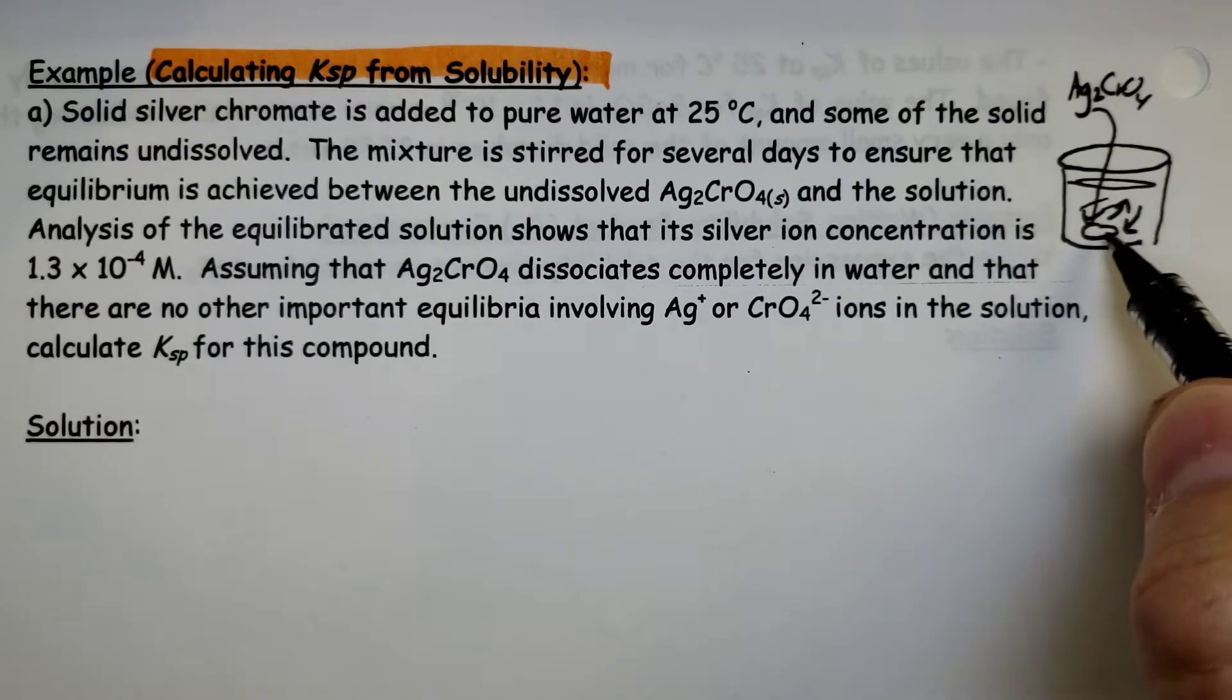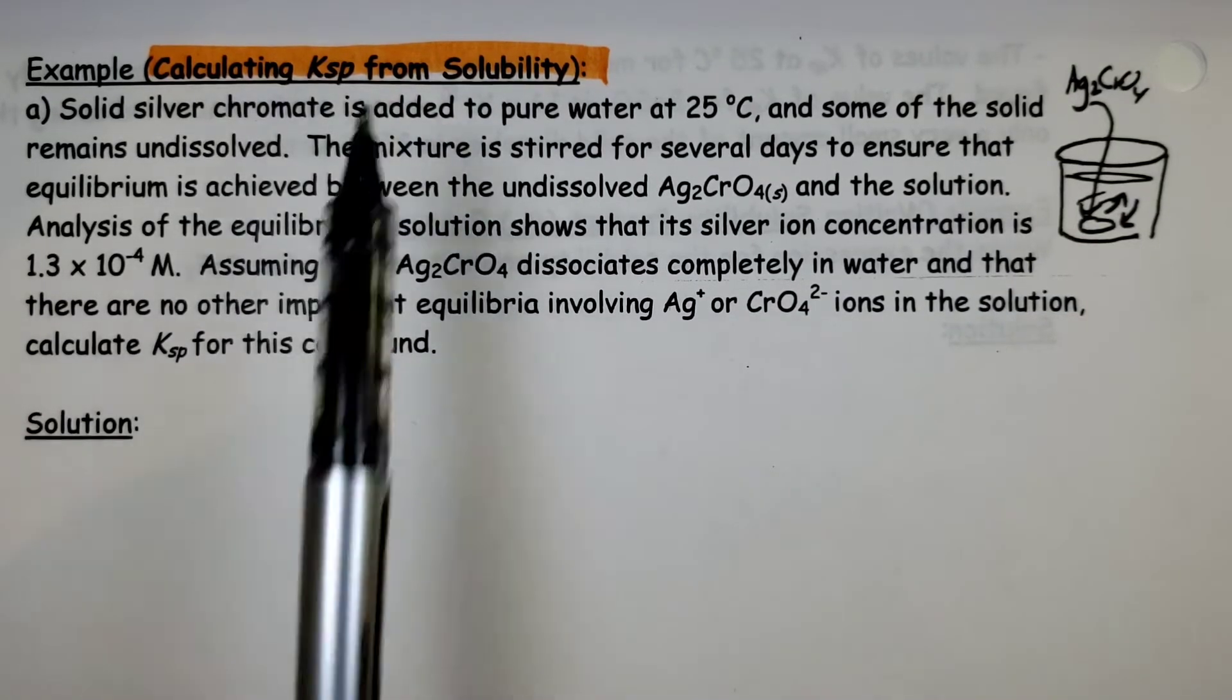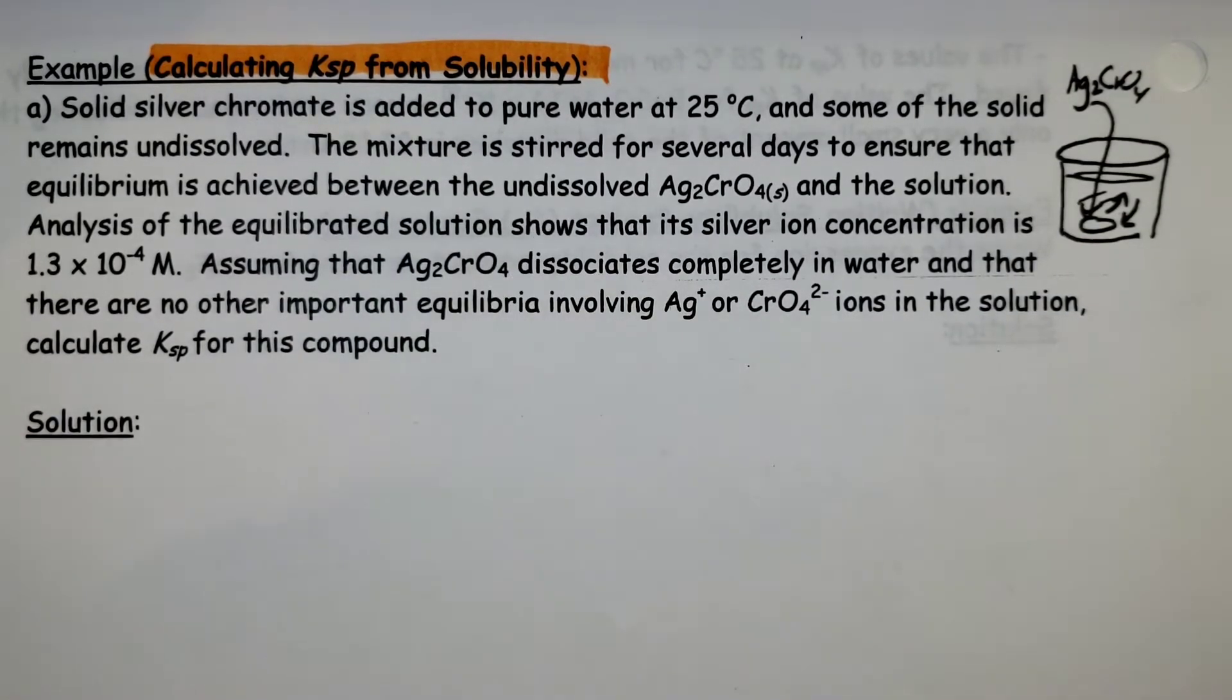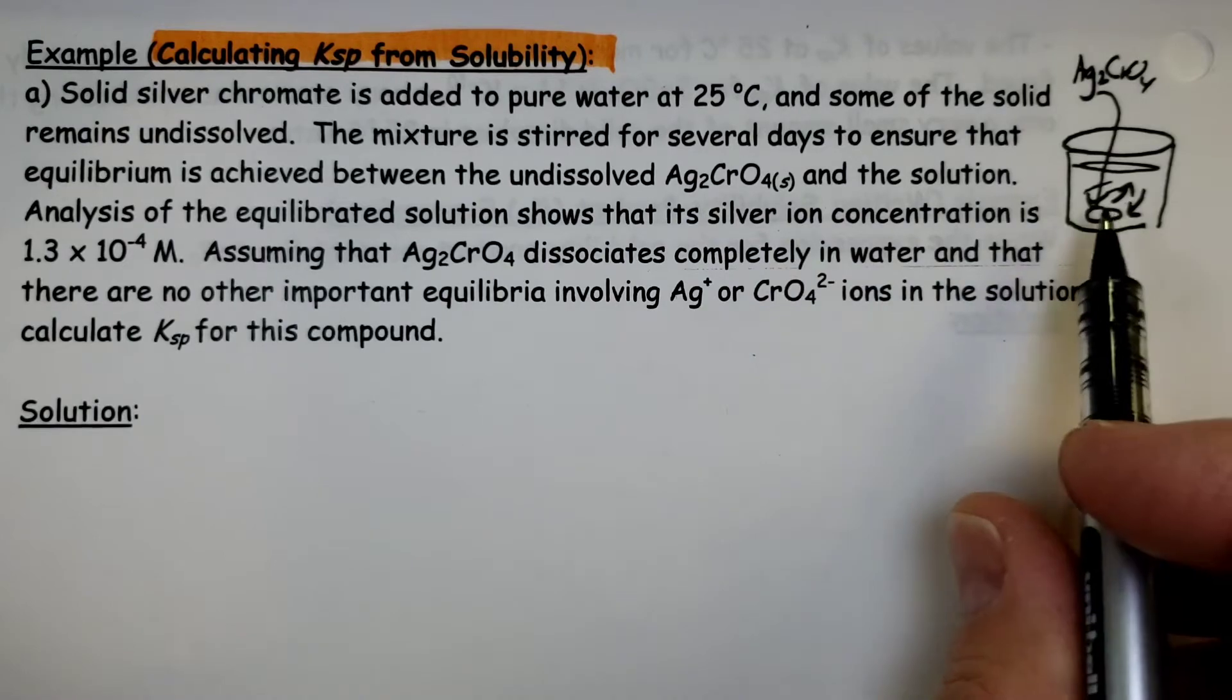We've dissolved the maximum amount that we are capable of at 25 degrees C in this amount of water. It's not just sitting there - it's continuously dissolving and recrystallizing. But the net effect is that we have solid on the bottom of that beaker. The mixture is stirred for several days to ensure that equilibrium is achieved between the undissolved Ag2CrO4 and the solution.